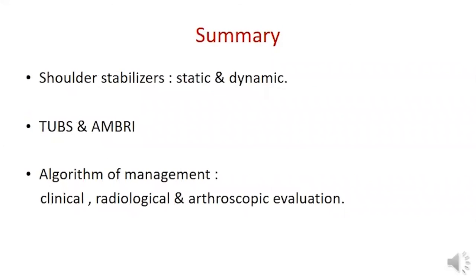To summarize: the shoulder is stabilized by static and dynamic stabilizers. There are two main types of shoulder instability — traumatic unidirectional and atraumatic multidirectional. The algorithm for management depends on clinical, radiological, and arthroscopic evaluation, with the most important factor being the presence or absence of bone deficiency.